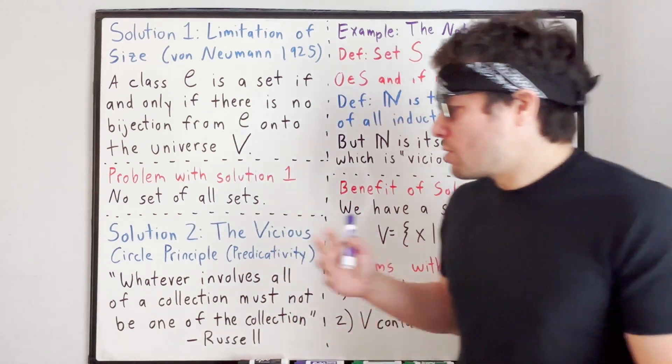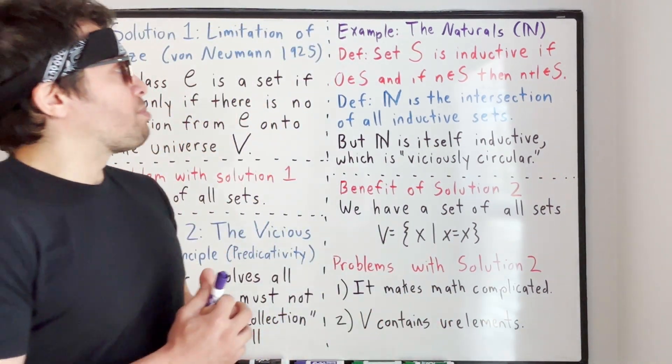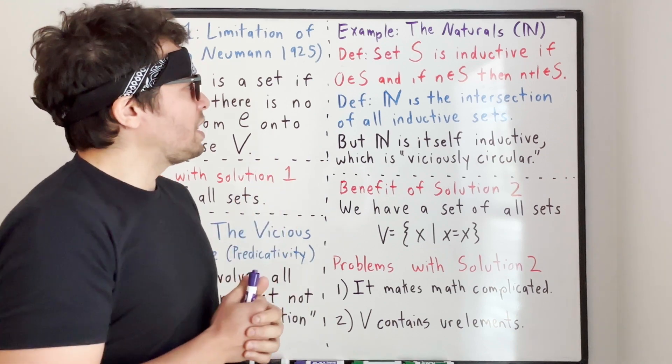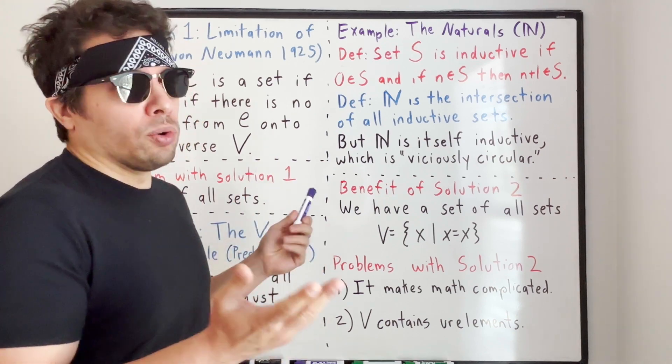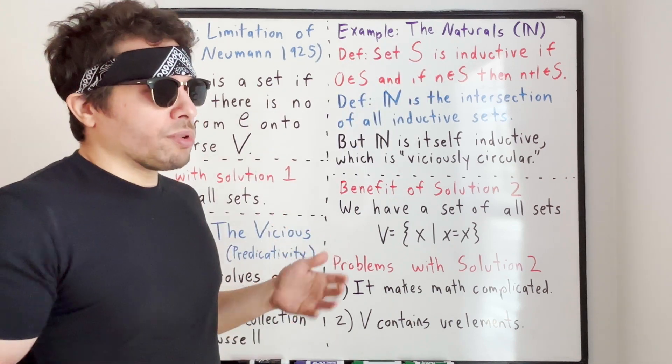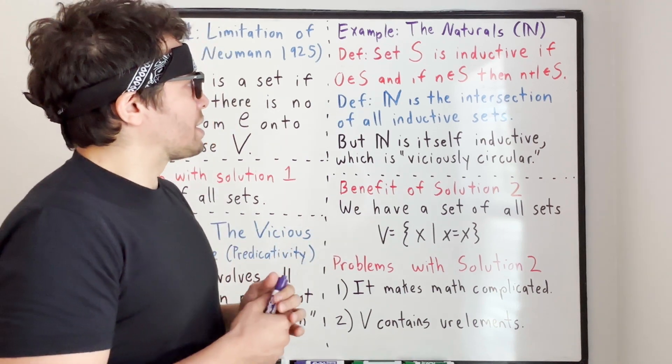It starts to get pretty technical. Things are getting pretty technical right now, so it probably would be beneficial to discuss an example. The first example we have, or the only example we're really going to do right now, is the natural numbers. The natural numbers, just as they're defined in your regular college-level analysis class.